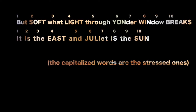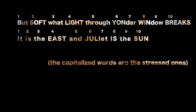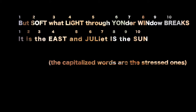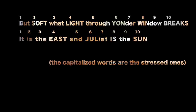What do you notice? Well first, in order to get 10 syllables, you discover you must make Juliet's name two syllables instead of three. So it's 'Juliet' instead of 'Juliet.' Second, the way I chose to stress the syllables — to scan it — it doesn't really look like regular iambic. It doesn't really look like the regular ba-dum, ba-dum, ba-dum.